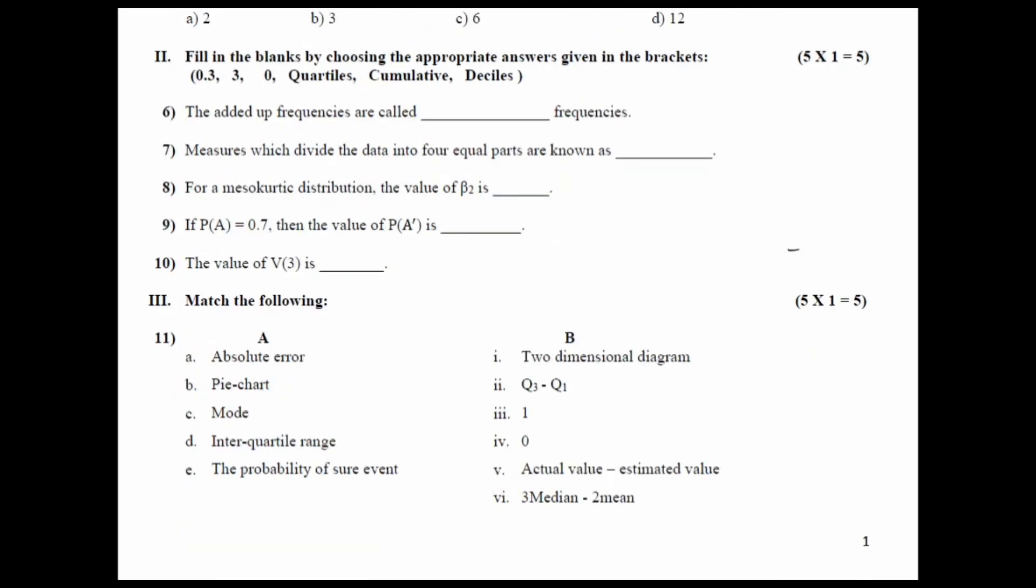What do you mean by absolute error? The definition of absolute error says the difference between the actual value and the estimated value. So, the correct answer here is this option, option number 5. In front of that, I will be writing the number here. Next. Pie chart. What is a pie chart? Pie chart is a two-dimensional diagram. One-dimensional diagrams are your bar diagrams and pie chart is your two-dimensional diagram.